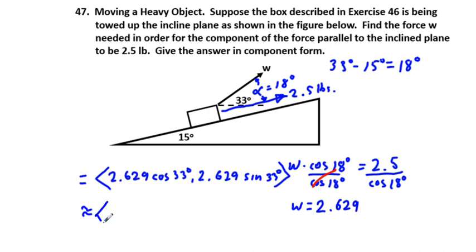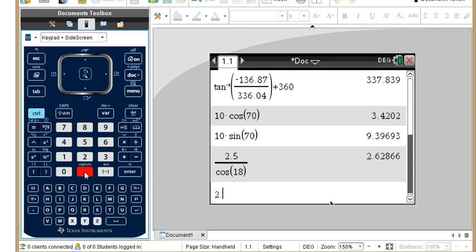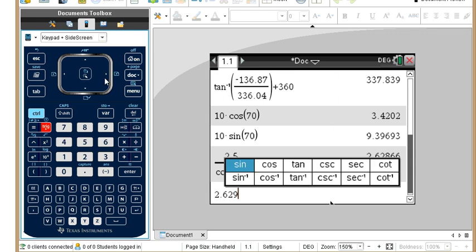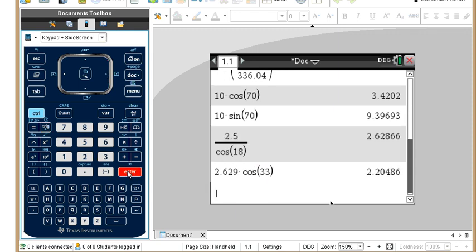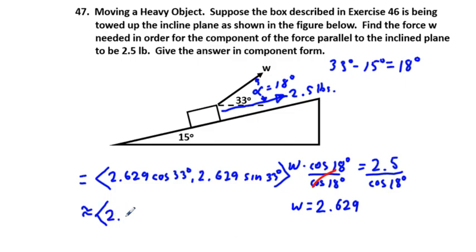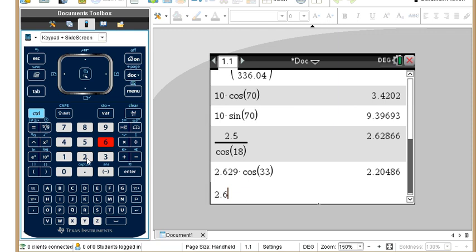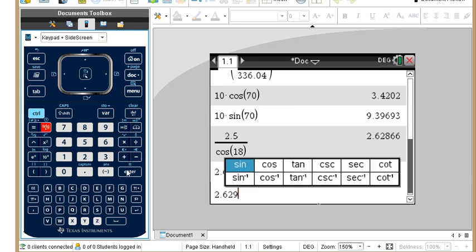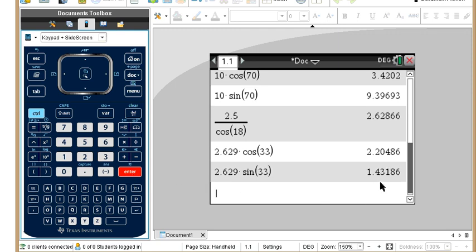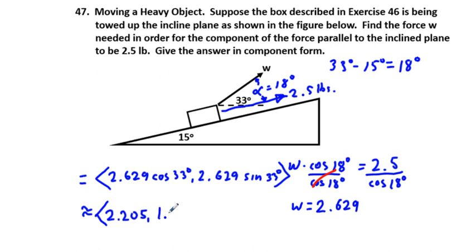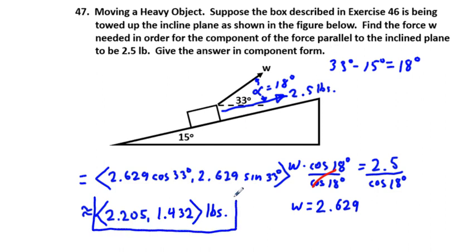Evaluating in the calculator: 2.629·cos(33°) ≈ 2.205 and 2.629·sin(33°) ≈ 1.432. So the component form is approximately (2.205, 1.432) pounds. The abbreviation 'lb' for pounds comes from the Roman word 'libra.'